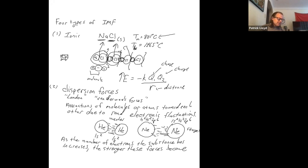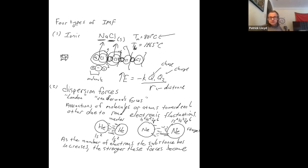Dispersion forces apply to atoms like helium or neon and to non-polar molecules like CH₄, which has a tetrahedral arrangement. How do you recognize when dispersion forces apply? Atoms have only dispersion forces, and non-polar molecules also have dispersion forces. This is the second category. The main measure of its strength is still boiling point — the more electrons, the stronger the forces, and the higher the boiling point.